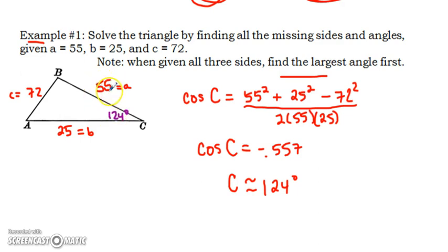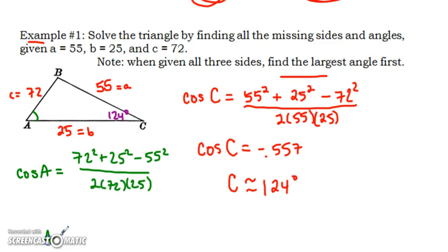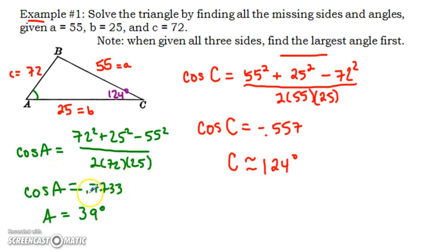I found one angle. I'm going to write that in a slightly different color, 124 degrees. Now I'm going to find the next biggest side length, angle A. Cosine of A would be equal to, but now I want the other two sides. 72² plus 25² minus 55², because it's the two sides and then the side across from my angle comes last, all over 2 times 72 times 25. Give yourself a moment to pause this. I got in my calculator about 0.7733 for the cosine of A. When I took the inverse, I got 39 degrees.